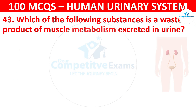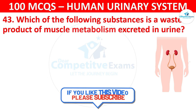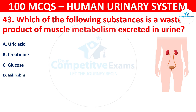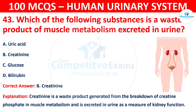Question 43: Which of the following substances is a waste product of muscle metabolism excreted in urine? The options are: uric acid, creatinine, glucose, or bilirubin. The correct answer is B, that is creatinine. Creatinine is a waste product generated from the breakdown of creatine phosphate in muscle metabolism and is excreted in urine as a measure of kidney function.